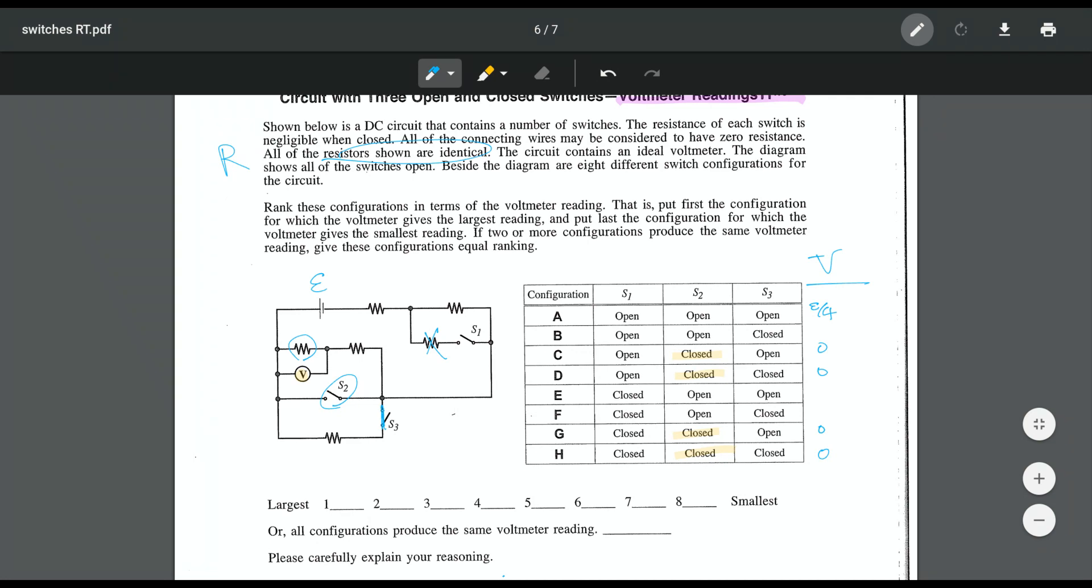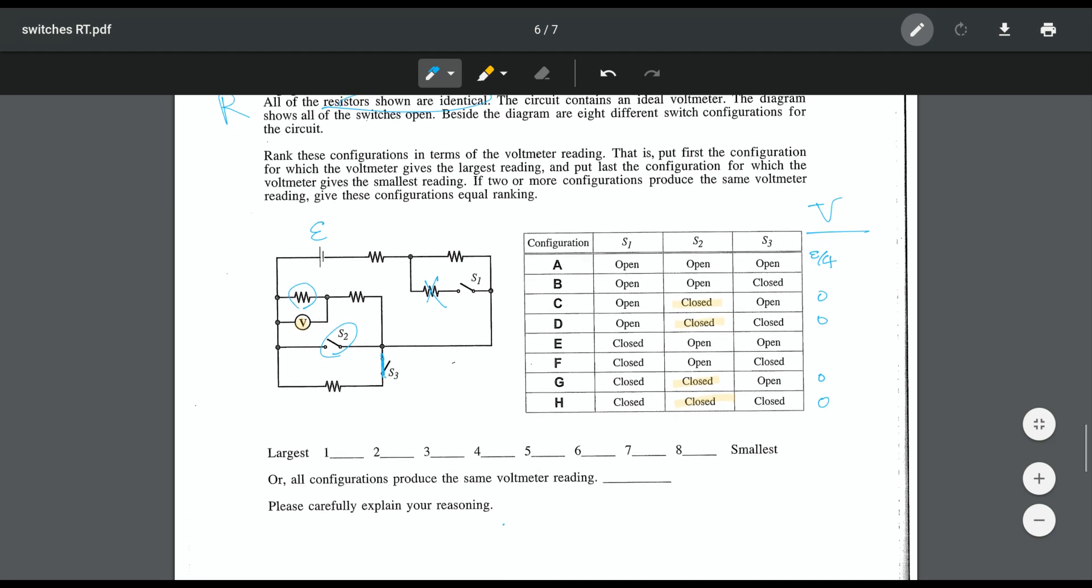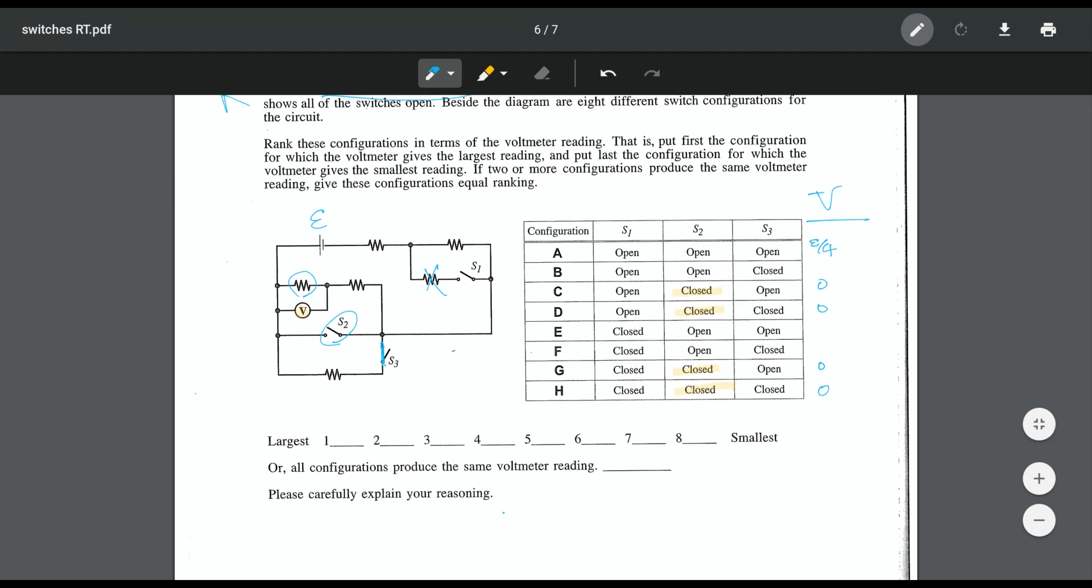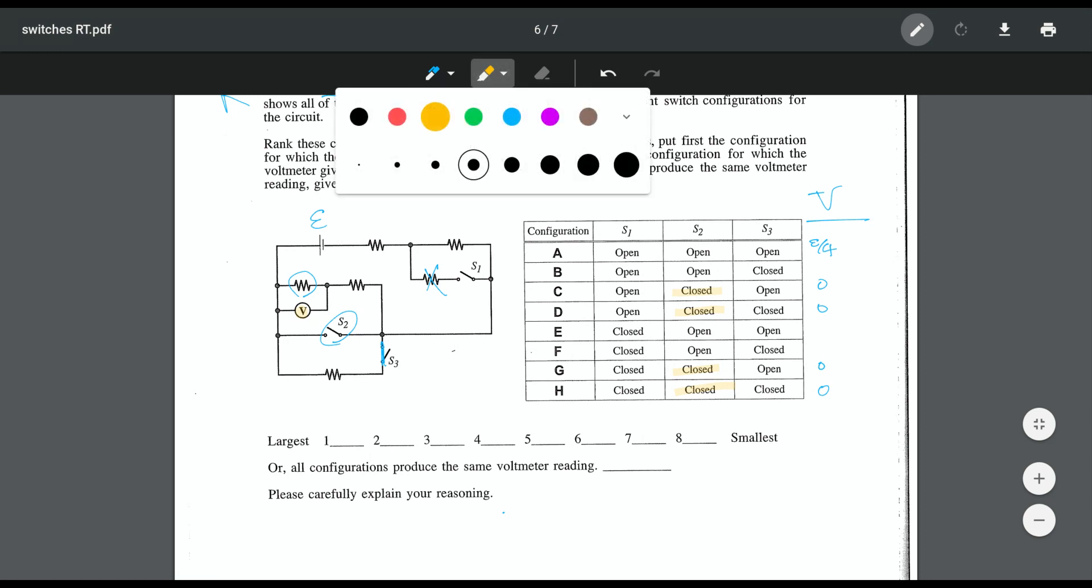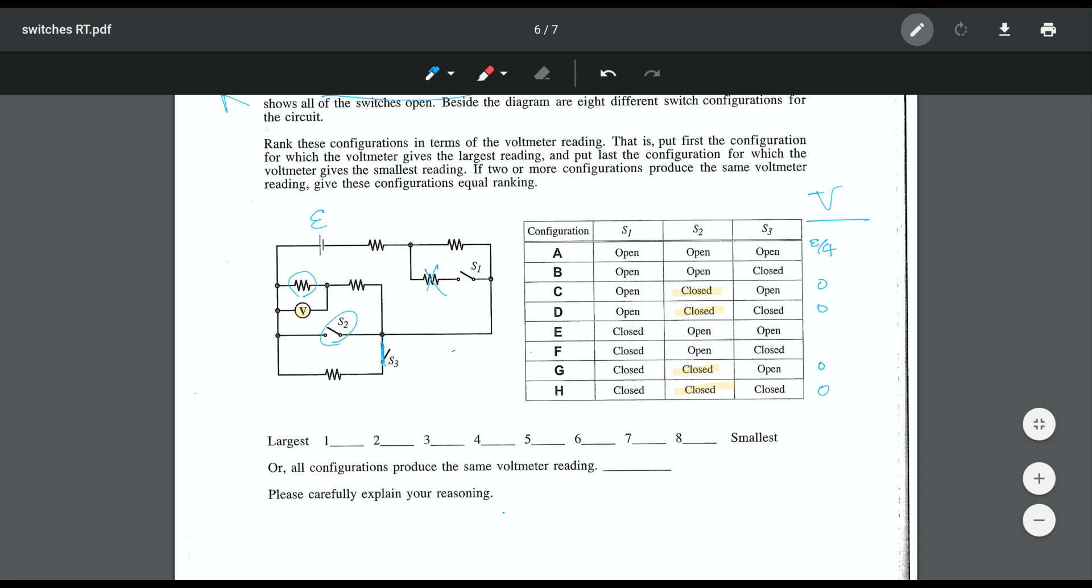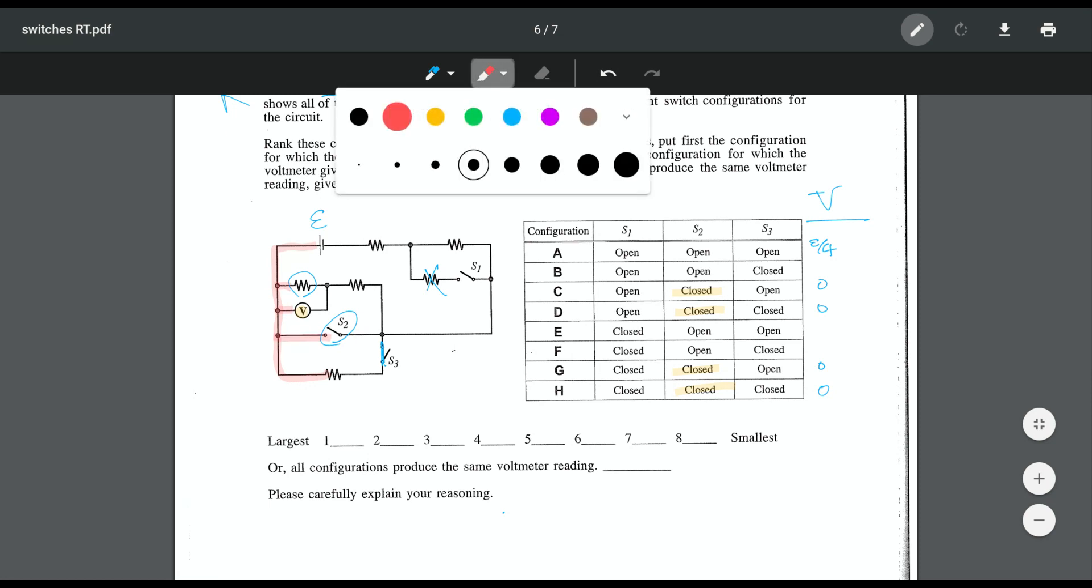So in order to do this, what I want us to try to calculate is what would the voltmeter actually measure here. Let's calculate those, and then you can rank from there. So in this case here, there are different ways to look at this, but I want to take you through a potential-focused way. I'm going to start by highlighting, and then after this I'll let you do the rest of the nonzero cases.